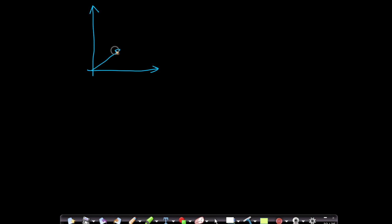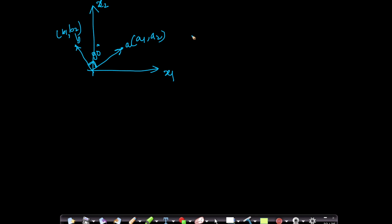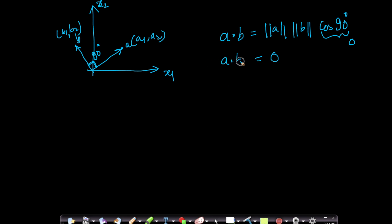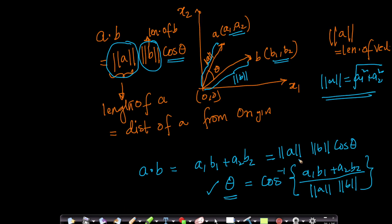What if two vectors are perpendicular to each other, meaning the angle between them is 90 degrees? Then a dot b equals |a|·|b|·cos(90°), and since cos(90°) is zero, a dot b will be zero. So if the dot product between two vectors is zero, we know those two vectors are perpendicular to each other.